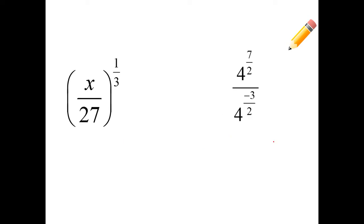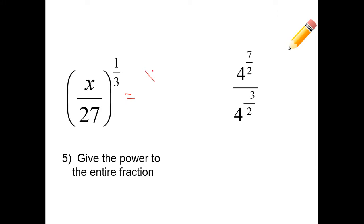For the last two examples: number 5, we need to give the power to the entire fraction, meaning the power is going to be given to the numerator and the denominator. So I'm going to have x to the 1/3 power over 27 to the 1/3 power. Now 27 to the 1/3 is not as simple as it can be — 27 to the 1/3 is the cube root of 27, which we know to be 3. You can check on your perfect exponents chart. So we have x to the 1/3 on top over 3.